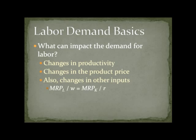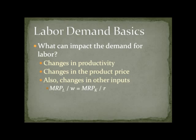Changes in other inputs can affect us as well. Here we have a marginal condition for two inputs — labor and capital — where the marginal revenue product of labor divided by the wage should equal the same ratio for capital. If the marginal product of capital changes or the price of capital changes, it will change the mix of capital and labor used. Sometimes capital and labor are substitutes, sometimes complements. But most of the time when we talk about changes in capital or technology, those things raise the marginal product of workers, and when they do, they raise the level of employment and raise wages.